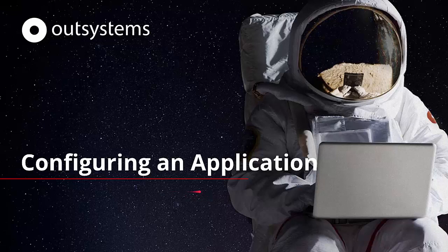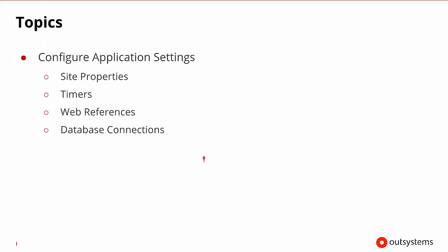Welcome to Configuring an Application in OutSystems. In this session, we're going to talk about configuring application settings. Some of the settings we'll talk about are site properties, settings for timers, web references, and database connections. So let's look at these in some more detail.